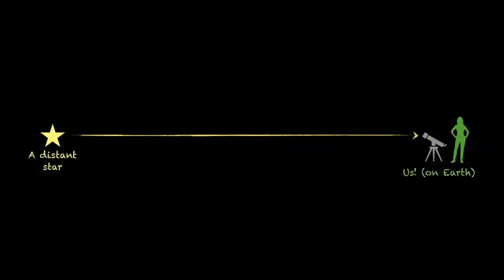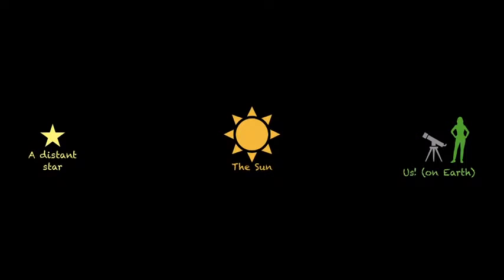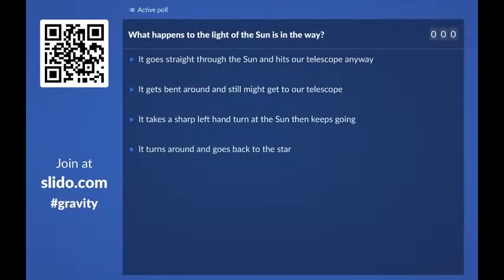The next thing is: if we consider a distant star, we want to observe it using our telescopes, collecting the light it emits. If there is nothing between us and the star except space, the light from the star travels in a straight line to reach us — simple. Things get trickier if something is in the way, say the Sun. So my last question for you is: what happens to the light from a distant star if the Sun is sitting in the way? Does it go straight through the Sun and hit our telescope? Does it get bent around and still reach our telescope? Does it take a sharp left-hand turn? Or does it turn around and go back to the star?